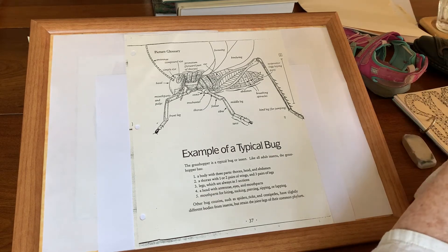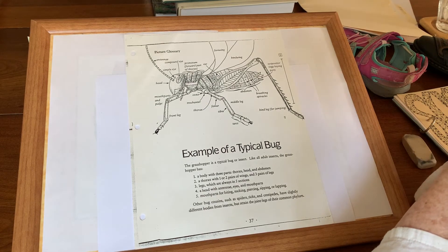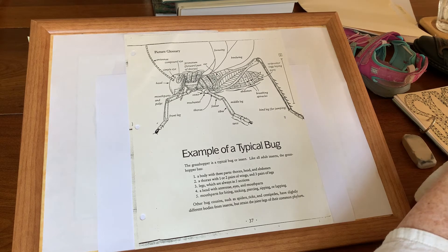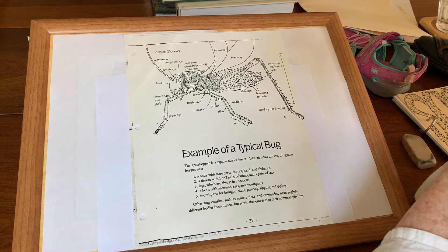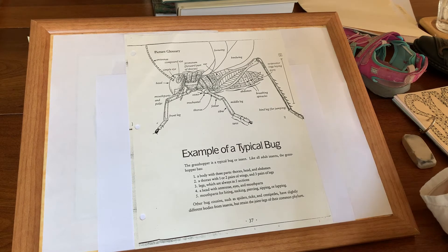Is a butterfly an insect? Yes. Is a beetle an insect? Yes. A fly, a bee, a grasshopper, a praying mantis — all insects.